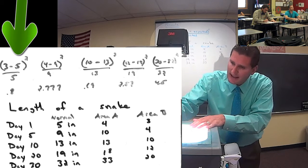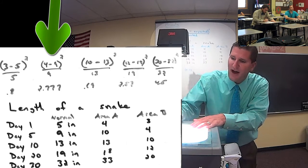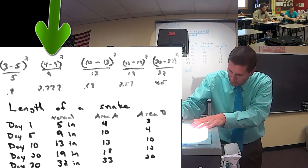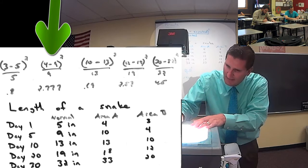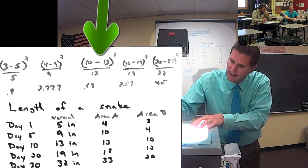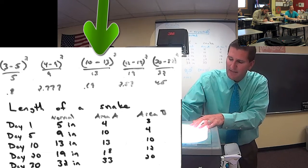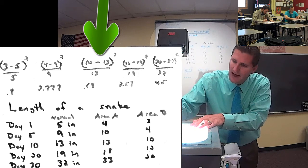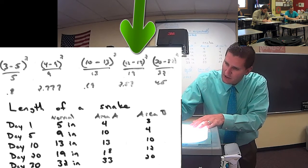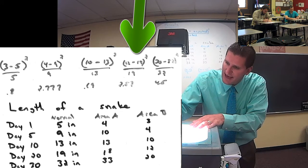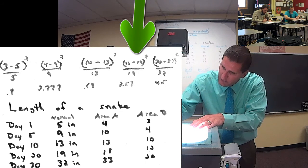Day 5 measurement: his snake was 4 when the expected value was 9 — that's negative 5, negative 5 squared is 25, divided by the expected amount of 9, gives us a value of 2.777. Day 10: his snake was 10, minus 13 expected, that's negative 3, 3 squared is 9, divided by 13, gives us a chi-squared value of 0.69.